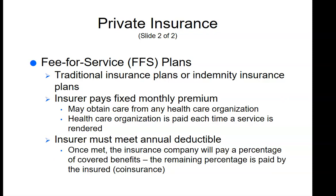Fee-for-service plans, also called traditional or indemnity insurance plans: the insurer pays a fixed monthly premium and may obtain care from any health organization. The health care organization is paid each time a service is rendered. The insurer must meet annual deductibles; once met, the insurance company pays a percentage of covered benefits and the remaining percentage is paid by the insurer's co-insurance. Until the early 1970s, most private health insurance companies offered only fee-for-service plans. A deductible is a specified dollar amount the patient must pay before the insurance plan begins covering health care costs.